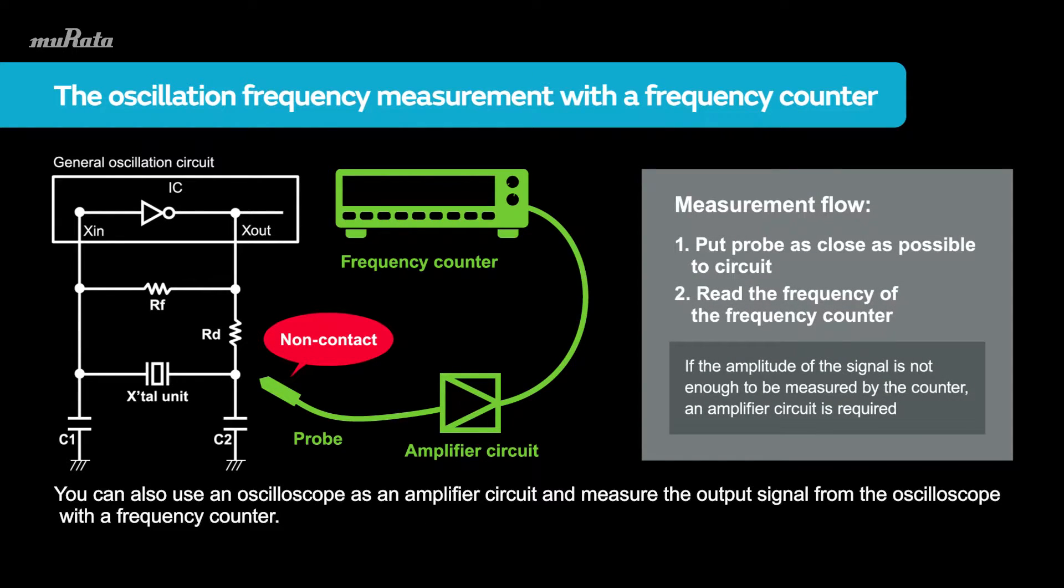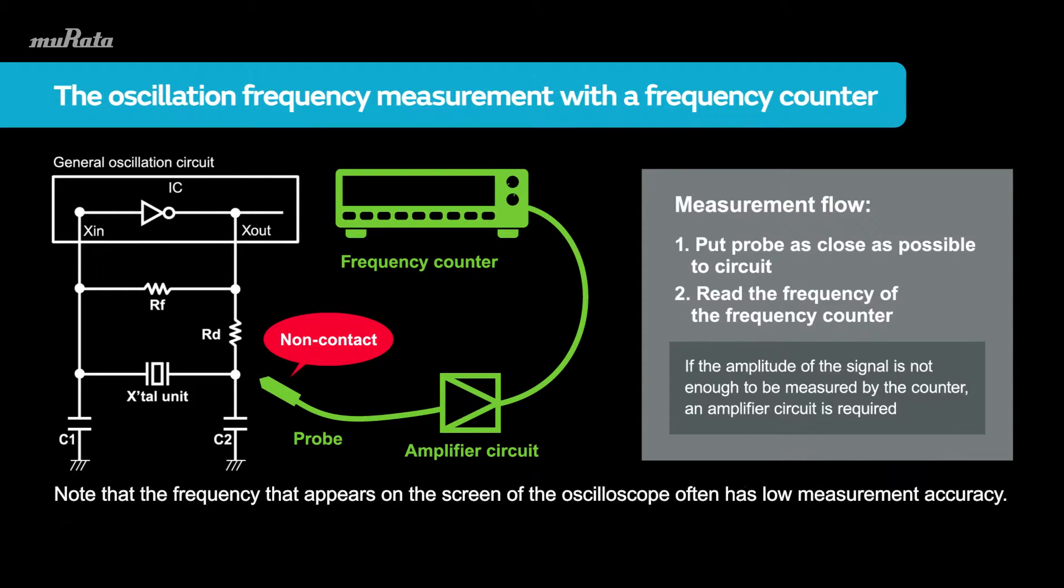You can also use an oscilloscope as an amplifier circuit and measure the output signal from the oscilloscope with a frequency counter. Note that the frequency that appears on the screen of the oscilloscope often has low measurement accuracy.